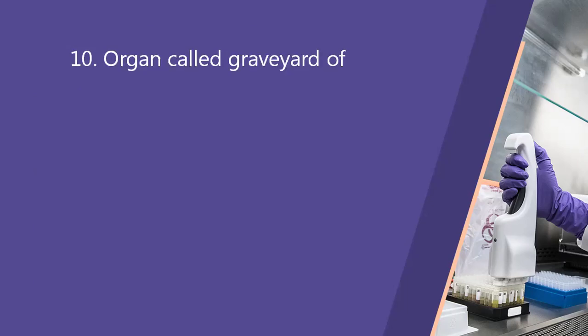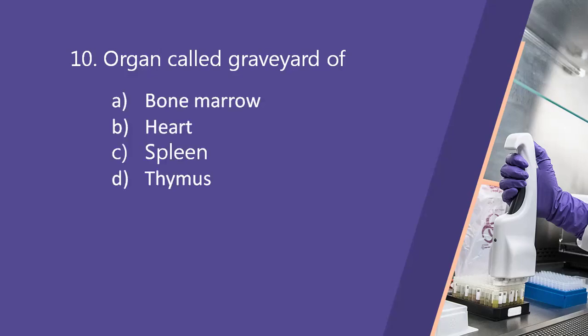Next question: organ called graveyard of RBCs. Option A, bone marrow. Option B, heart. Option C, spleen. Option D, thymus. The right answer is option C, spleen. The spleen is the largest organ in the lymphatic system and is known as the graveyard of RBCs because RBCs are destroyed there — approximately 2.5 million RBCs are destroyed in the spleen every second.